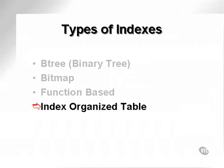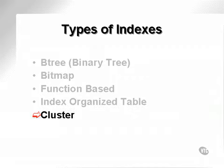An index-organized table is really a table with its data physically organized and sorted by the index. A cluster is similar to an index-organized table, but with two differences. Firstly, a cluster can be made up of a join — that is, more than one table. Also, the cluster does not necessarily contain all the columns from the tables in the join.